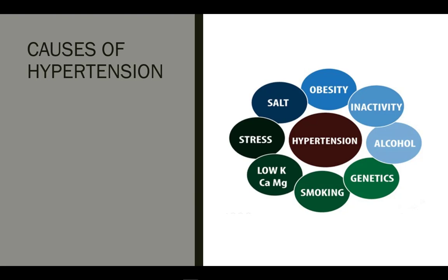There are several potential risk factors for developing hypertension, including obesity, physical inactivity, genetics, smoking, excessive alcohol consumption, and stress. A poor diet, especially one with excessive sodium and low levels of minerals such as calcium, potassium, and magnesium, can also contribute to high blood pressure.